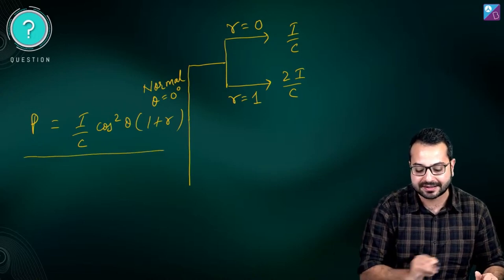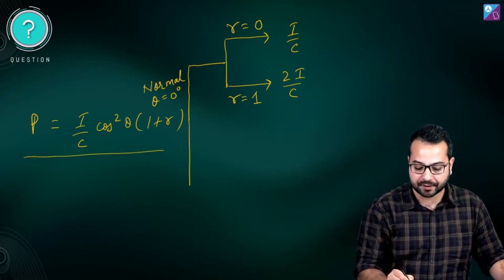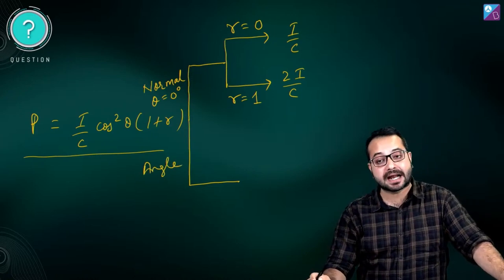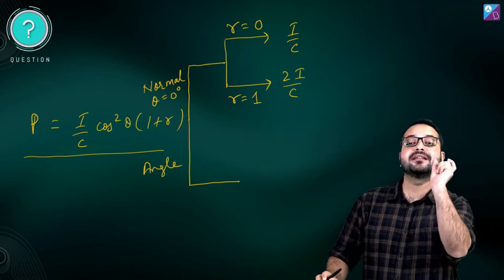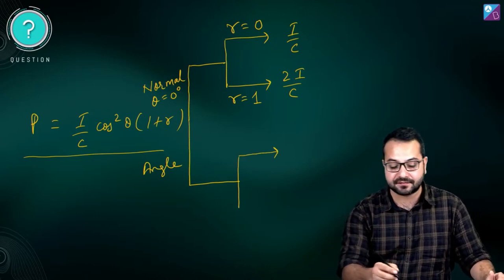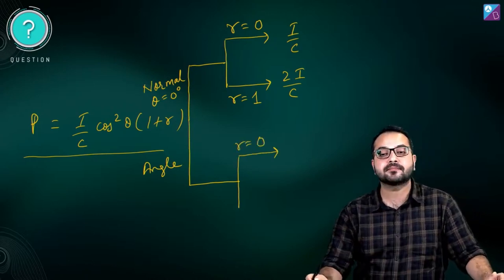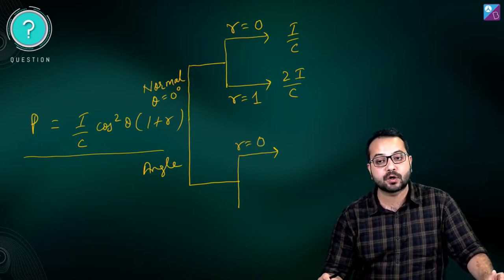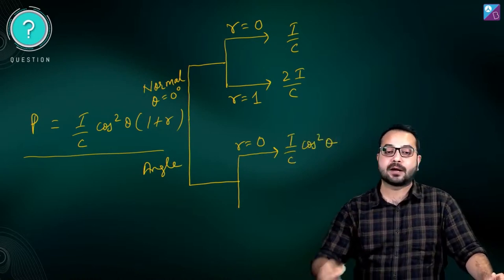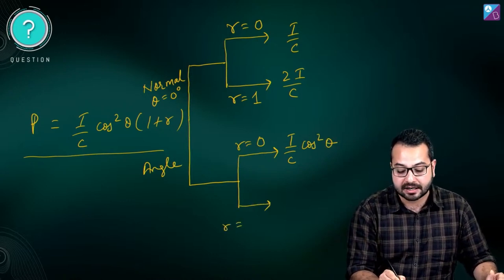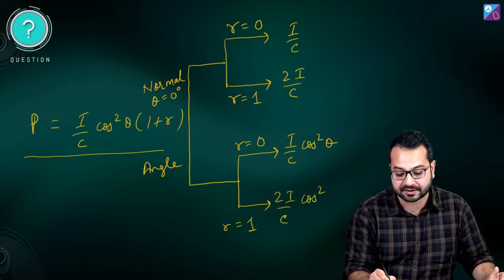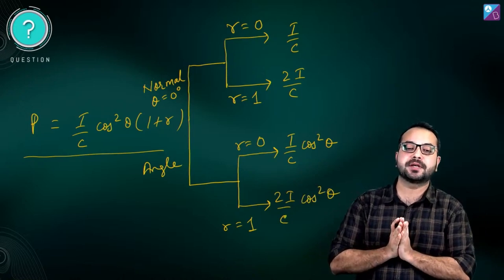Next, if light is falling at an angle, theta is the angle of incidence. Again there are two cases. When it is perfectly absorbing, r equals zero, and the radiation pressure becomes I/C × cos²θ. When it is completely reflecting, r equals one, and the radiation pressure becomes 2I/C × cos²θ.